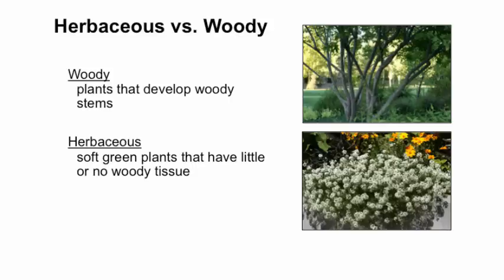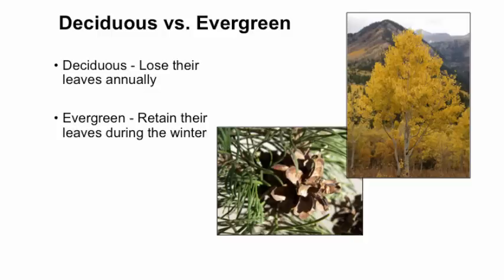Trees and shrubs are grouped as woody plants, while plants without woody stems are referred to as herbaceous. Trees and shrubs are further grouped by those that keep their foliage, or are evergreen, and those that lose their foliage, or are deciduous, in winter.